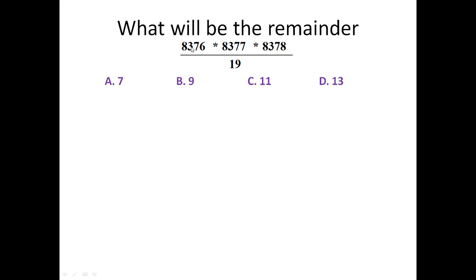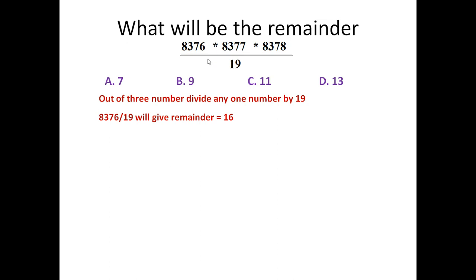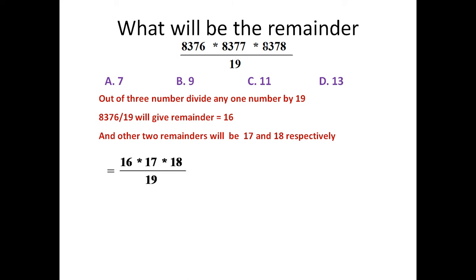So friends, again take any one number and divide it by 19. Out of the three numbers, divide any one by 19. If we take the first number and divide by 19, it will give remainder equal to 16. The others will give remainders 17 and 18, because they are greater by 1. So we will have three remainders: 16, 17, and 18 respectively. Our problem is now reduced to 16 × 17 × 18 divided by 19.